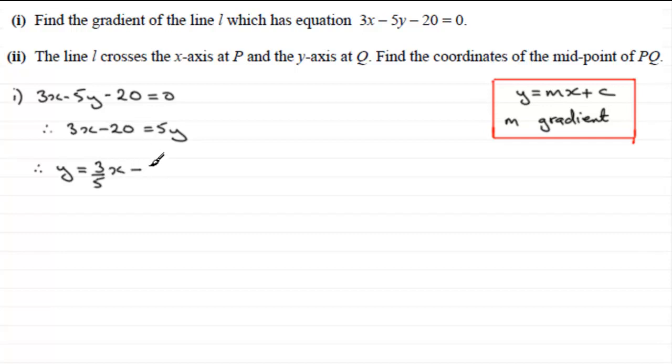So we can see therefore the m value, the value in front of the x, is the gradient, and that gradient is going to equal 3/5. So just summarize there, therefore the gradient equals 3/5.